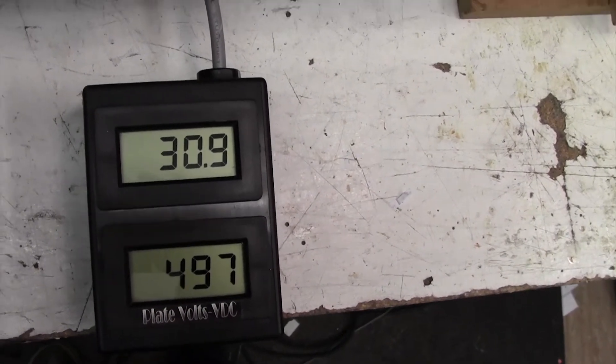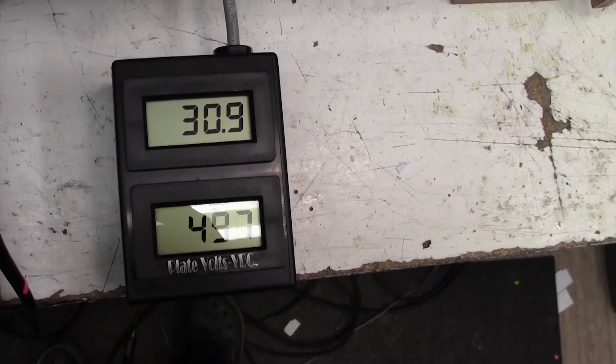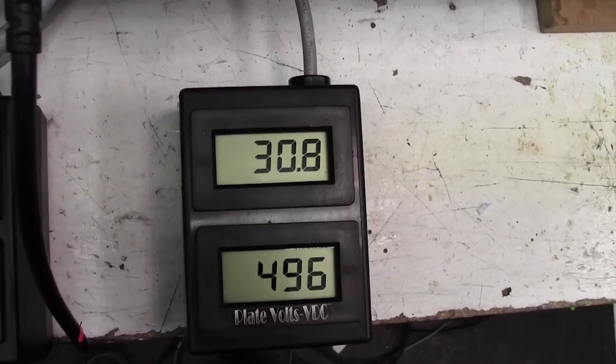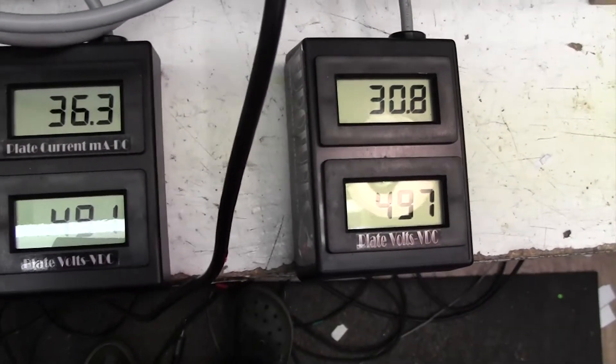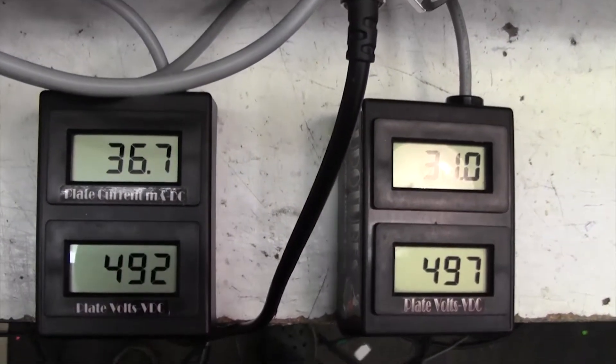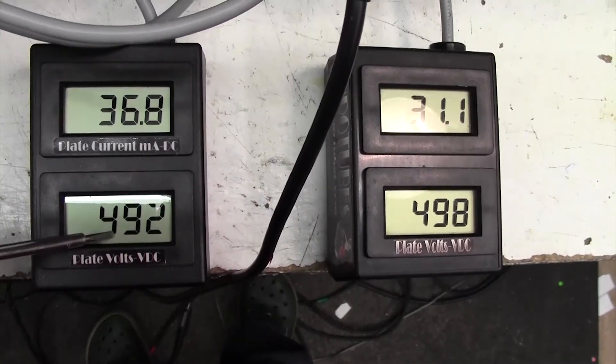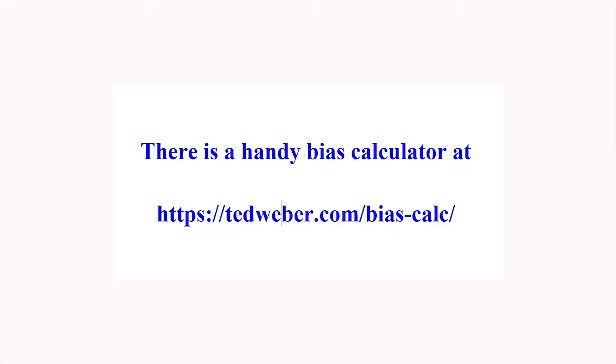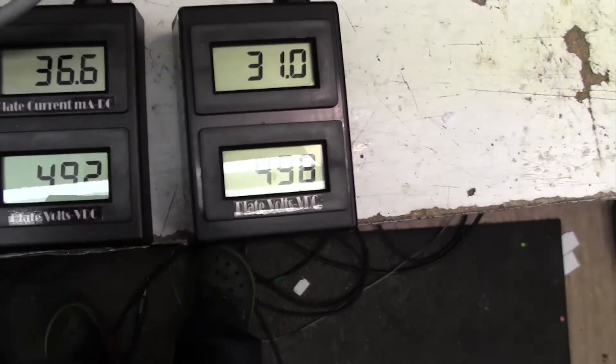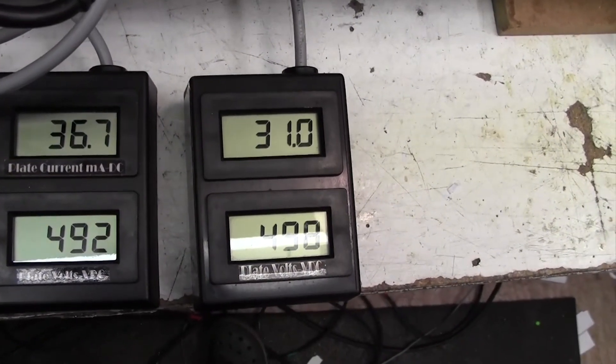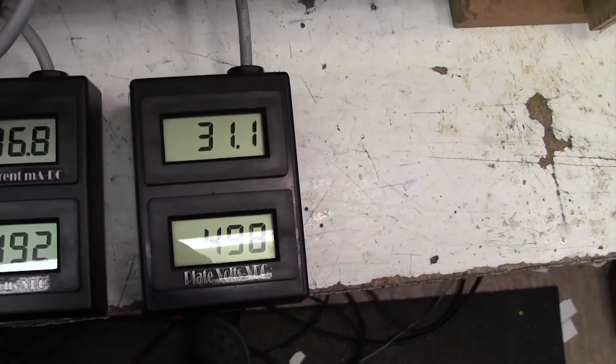I'm going to set this up at about 30-35 milliamps. There's a very good bias calculator online which I'll put up on the screen in a moment, and that allows you to calculate the correct bias current for whatever plate voltage you've got. You can probably see there's a bit of a discrepancy between the bias currents on this amp - one is 36 milliamps, one is 31.